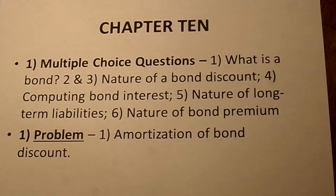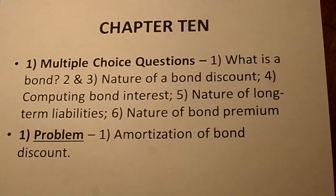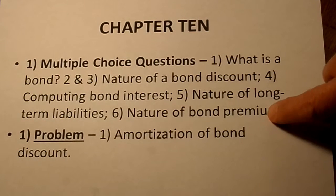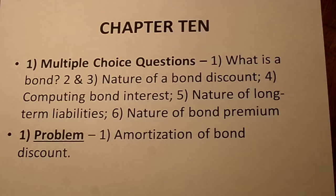You'd have to know the nature of long-term liabilities — this might be what's the characteristic of a long-term liability or what's an example of one. Also, what's the nature of a bond premium? That's the opposite of the bond discount questions. Then there'll be a problem where you have to amortize a bond discount using the straight-line method.